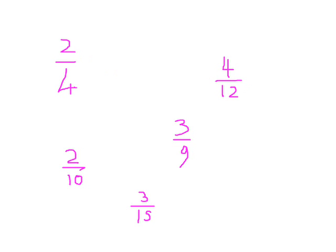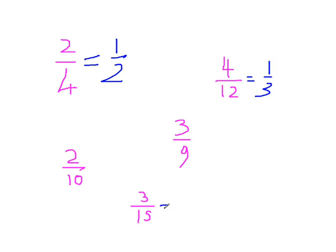So two quarters becomes one half. Four twelfths — four goes into both the top and the bottom — becomes one third. And three fifteenths becomes one fifth.